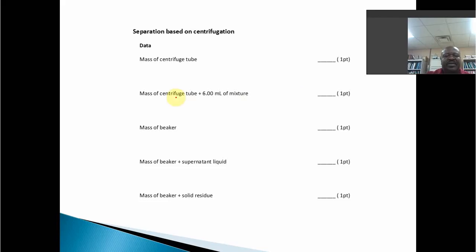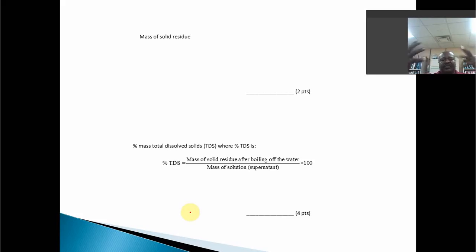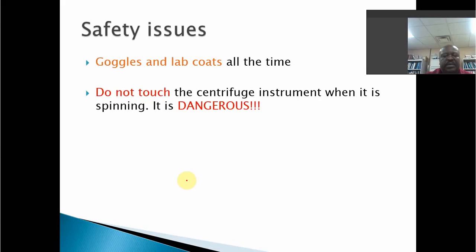Mass of the centrifuge tube. Mass of centrifuge plus six milliliters. That difference gives you the mass of the mixture. Mass of the beaker. Mass of the beaker plus supernatant liquid. Mass of the beaker plus solid residue. All of this is data. And then you go through the calculations where we ask you to find a number of masses. Mass of the six milliliters, mass of the supernatant liquid, mass of the boiled water, mass of the solid residue. All of those are based from a linear combination subtraction of the things you've done before. And then at the end here, mass of total dissolved solids for this part.